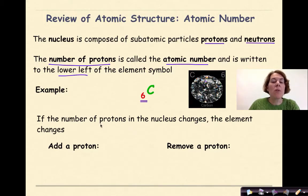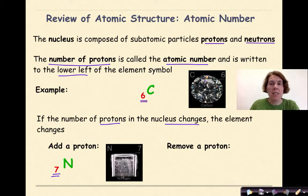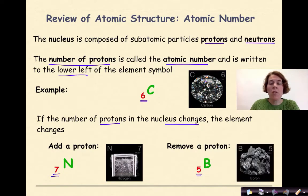If the number of protons in the nucleus changes, the element is going to change. So for example, if I were to add a proton to this carbon, I would have an atomic number now of seven and I would be forming nitrogen. Nitrogen looks something like this. It is a gas. If I remove a proton from this carbon, I'm going to have an atomic number of five, and I will form boron, which looks like this metalloid right here.